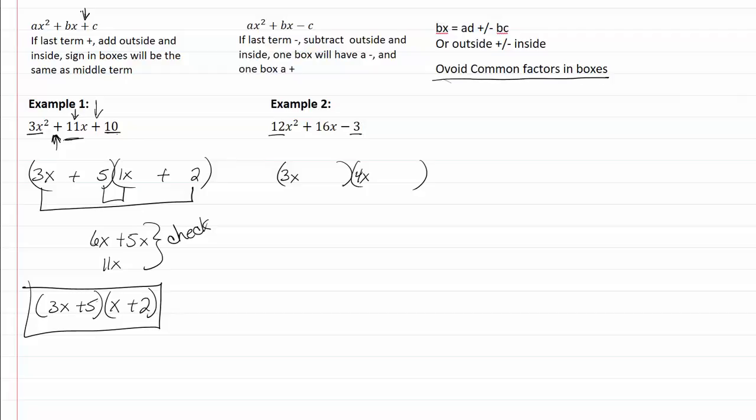Now this right here is a really important avoid common factors in the box. If there is a common factor we would take it out first and there's no common factors between twelve, sixteen and three. So we're not going to put the three in with my 3x. We're going to put it over with my 4x. And that means I'll put my one in with my 3x.